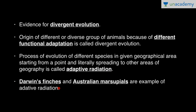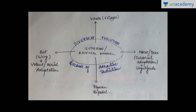Darwin's finches are considered the best example of adaptive radiation. Among eutherian or placental mammals, because of adaptive radiation we have whale, horse, deer, human, and bat. In their forelimbs: in whale it is modified to a flipper; in horse and deer for cursorial adaptation (angled for running); in human it is bipedal; and in bat we have wings for volant or aerial adaptation. All these have different habitats, demonstrating adaptive radiation.